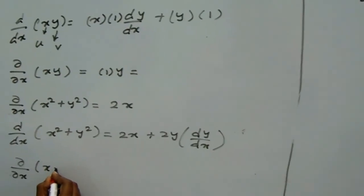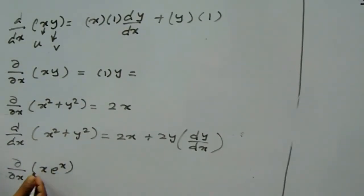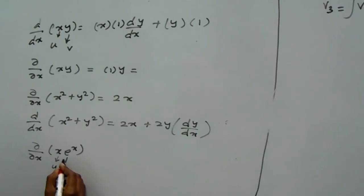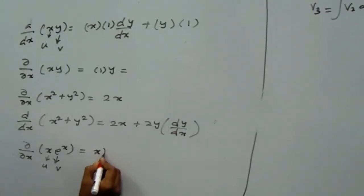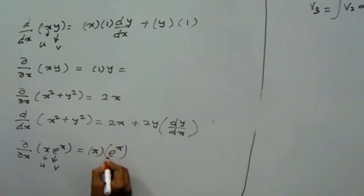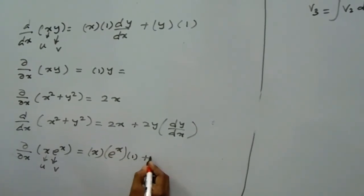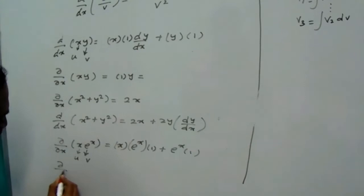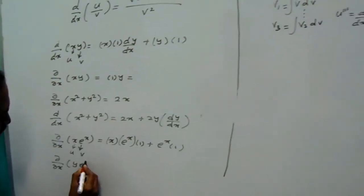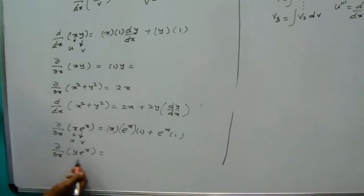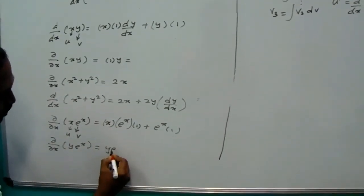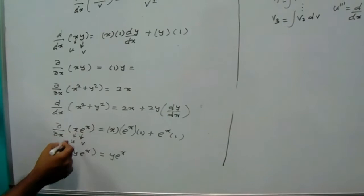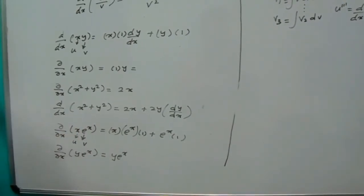For example, integrating x times e^x using the UdV formula, take u = x and v = e^x. Differentiating u gives 1, and integrating e^x gives e^x. The result is x times e^x minus e^x times 1, giving x·e^x minus e^x. If there is y times e^x with y as a constant, the answer is simply y times e^x.